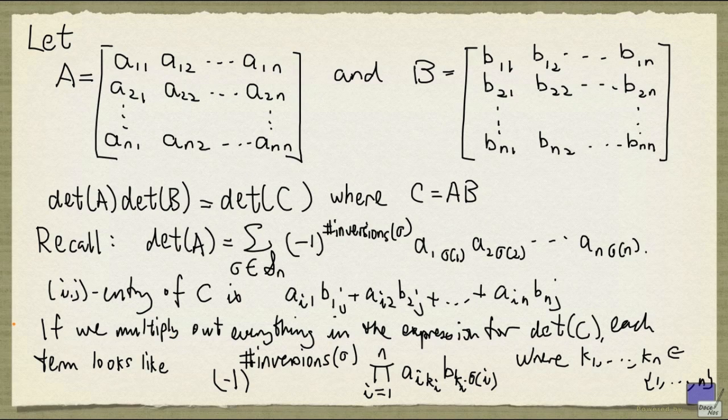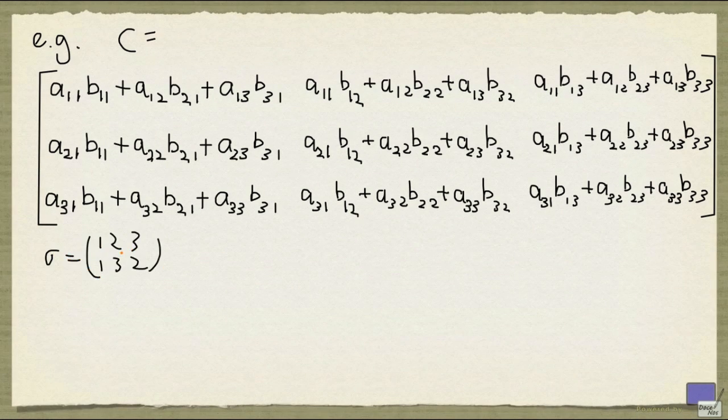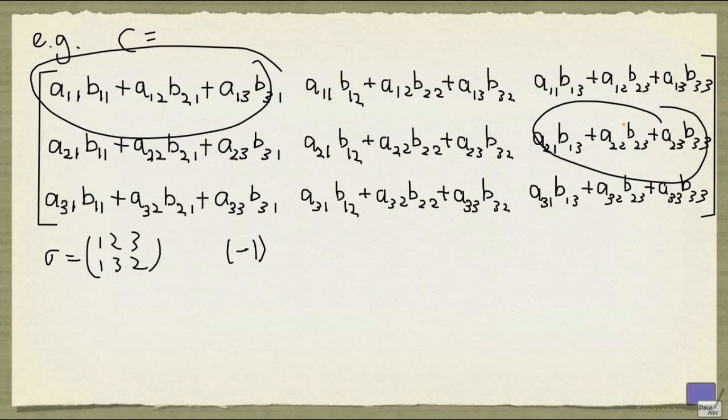Let's look at a 3 by 3 case to make this more concrete. We'll look at the term in the determinant of C given by the following sigma. There's one inversion here, so the term will have a negative sign, and this term will consist of the product of these three elements.